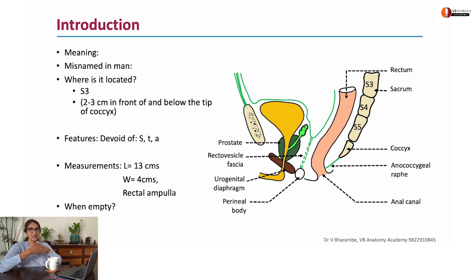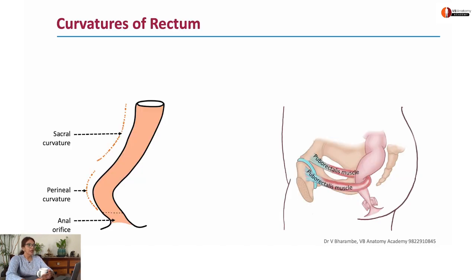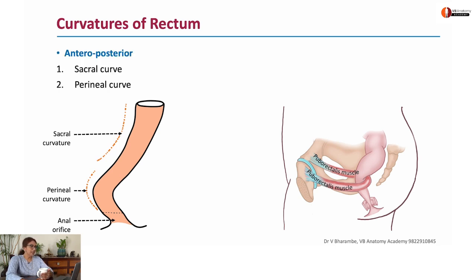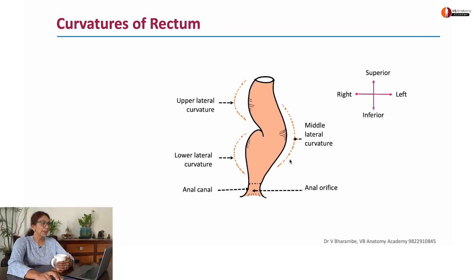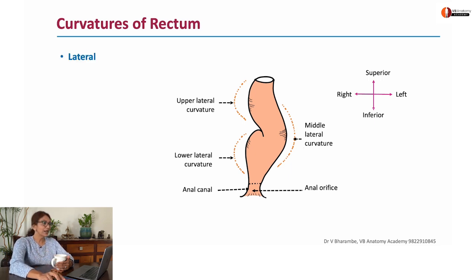Most of the time the rectum remains closed and remains as an anteroposterior slit. It has got anteroposterior curvatures and side-to-side curvatures. Here you are seeing a sacral curvature and a perineal curvature, caused by the puborectalis muscle winding around the rectum. The side-to-side curvatures: there are two curvatures on the right — upper and lower — and one on the left, which is the middle.